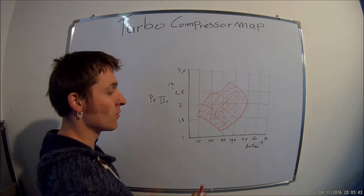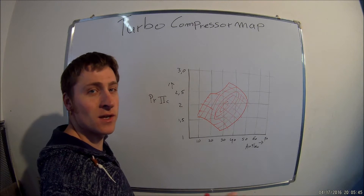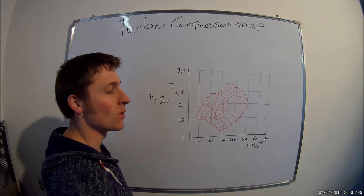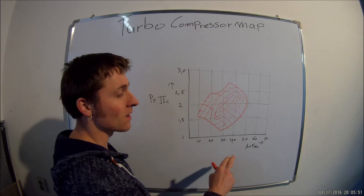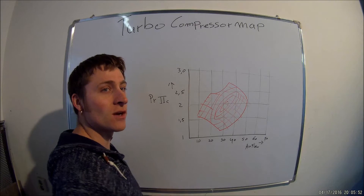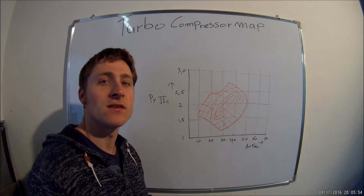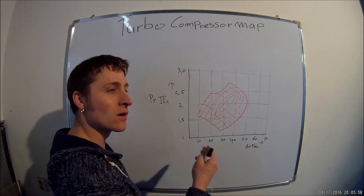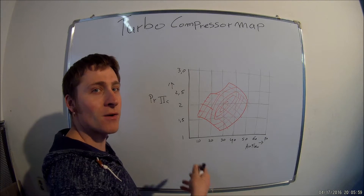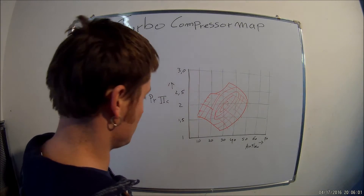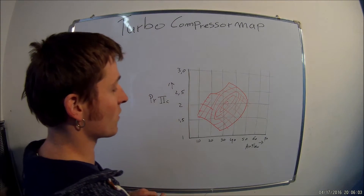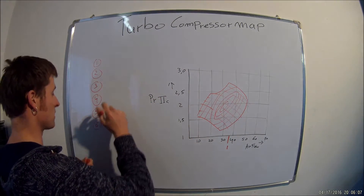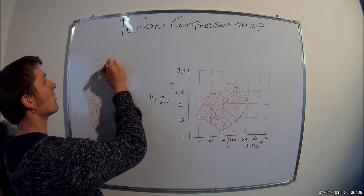The air flow is the air flow that you need to reach a certain amount of horsepower you want, and it can be calculated. I have another video about how you can calculate the needed air flow, and a certain compressor can flow an amount of air. We call this line one — it's the air flow of the compressor.